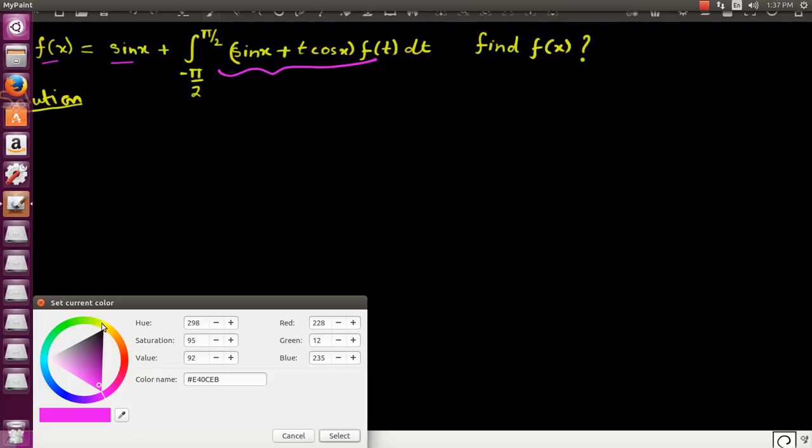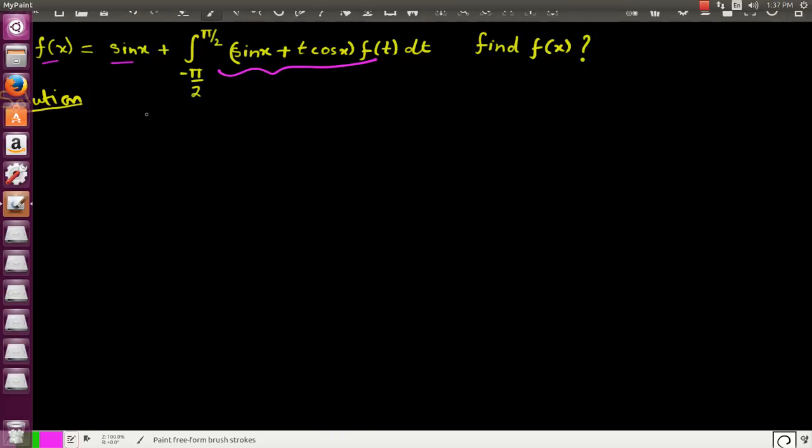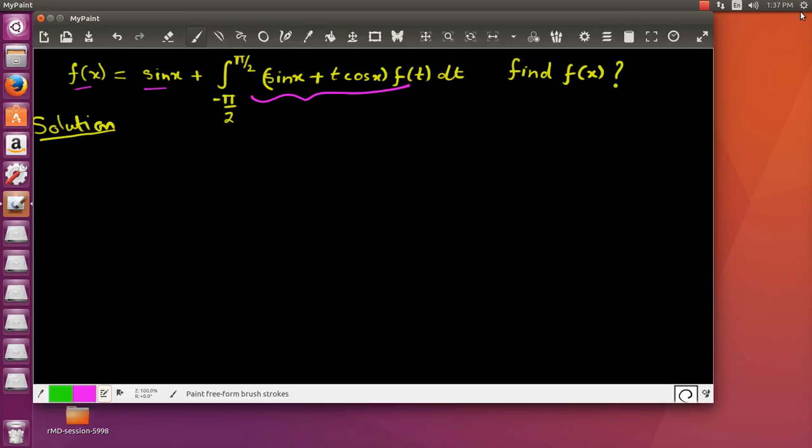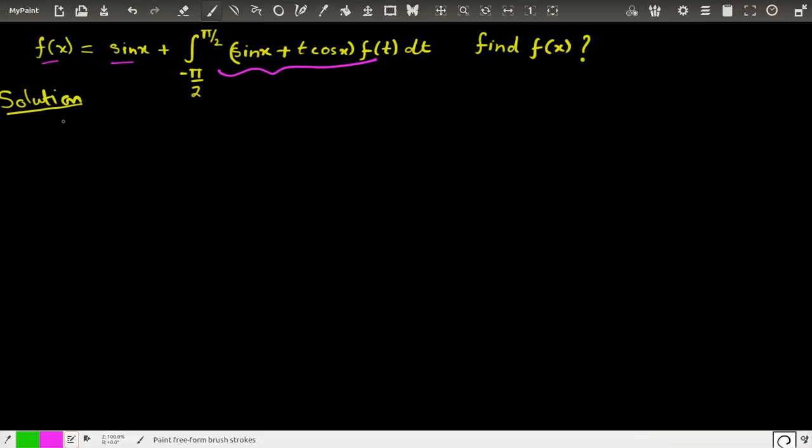So clearly the solution would go something like this. We can say that if the function f(x), if we separate the things and we find out that f(x) we can further write as sin(x) taken common, and if we take the sin(x) common from here...